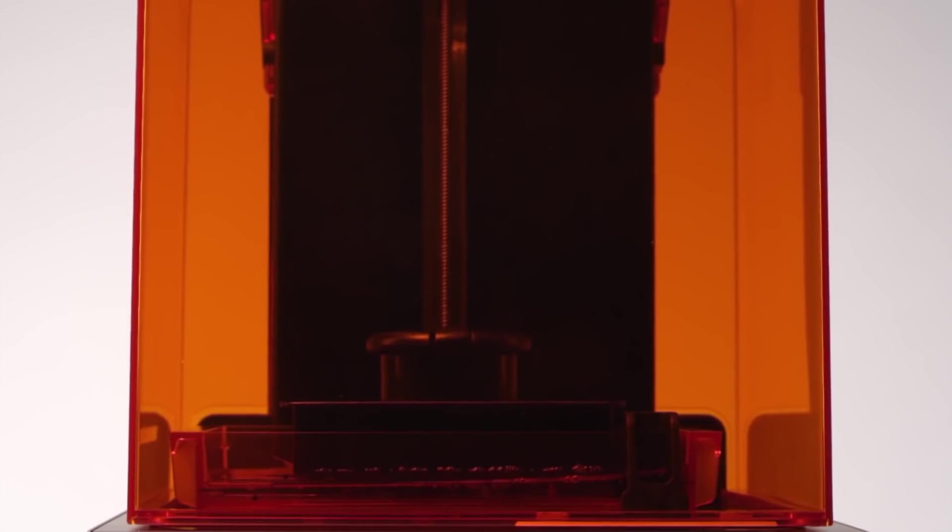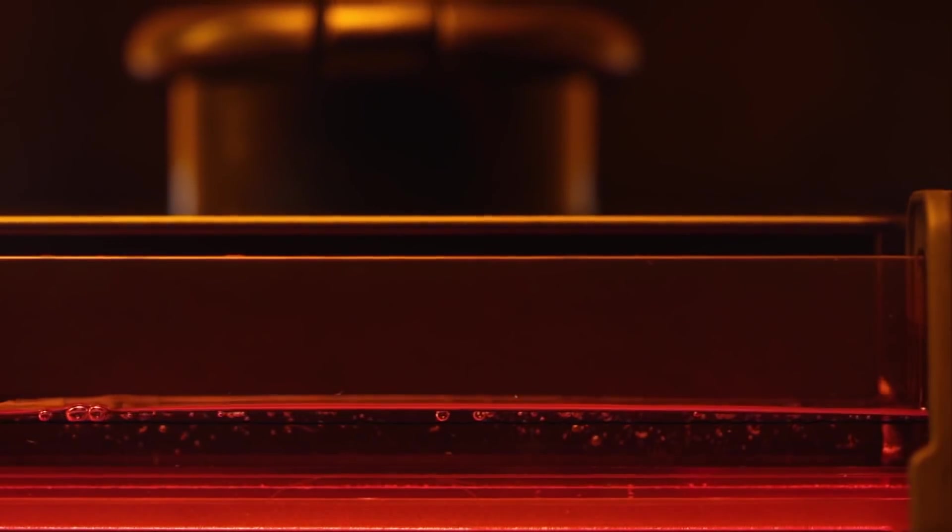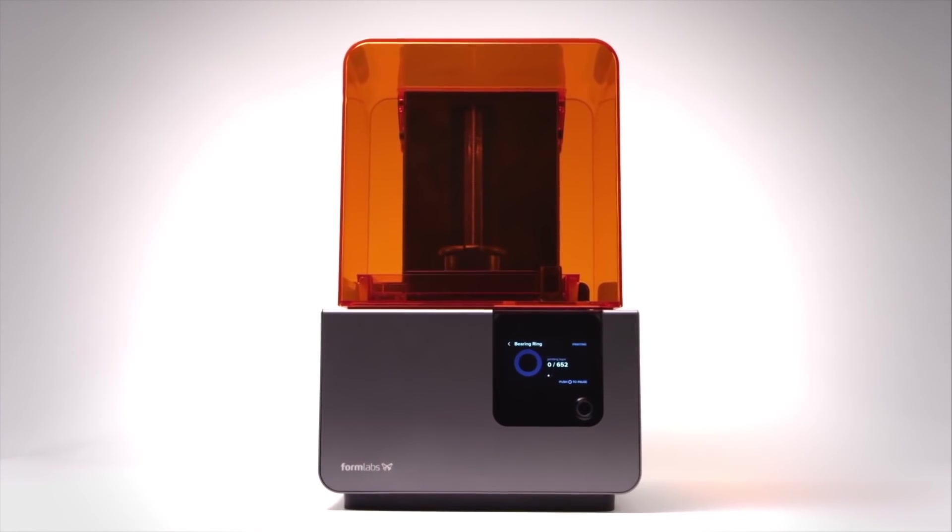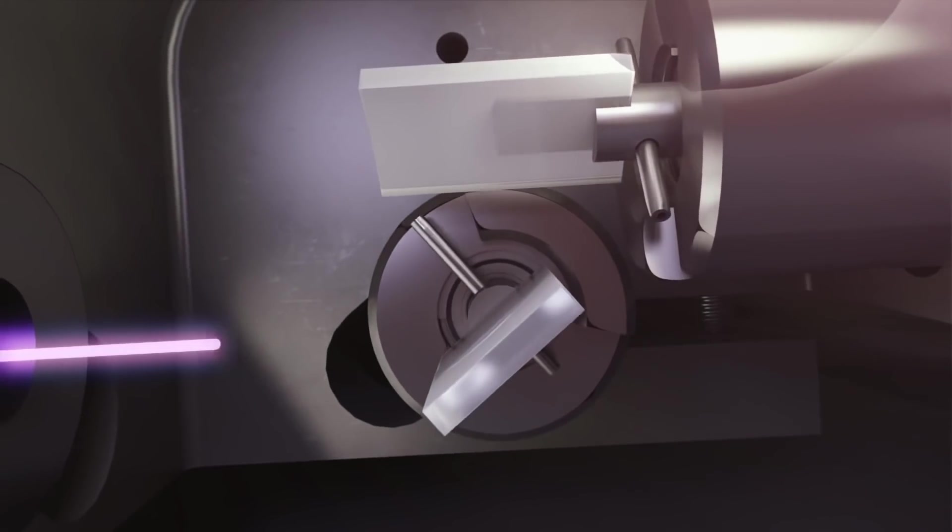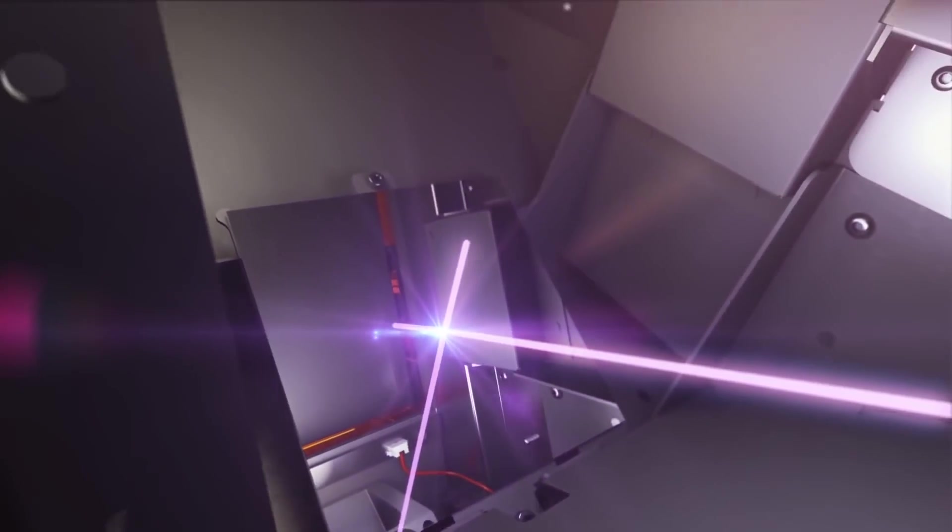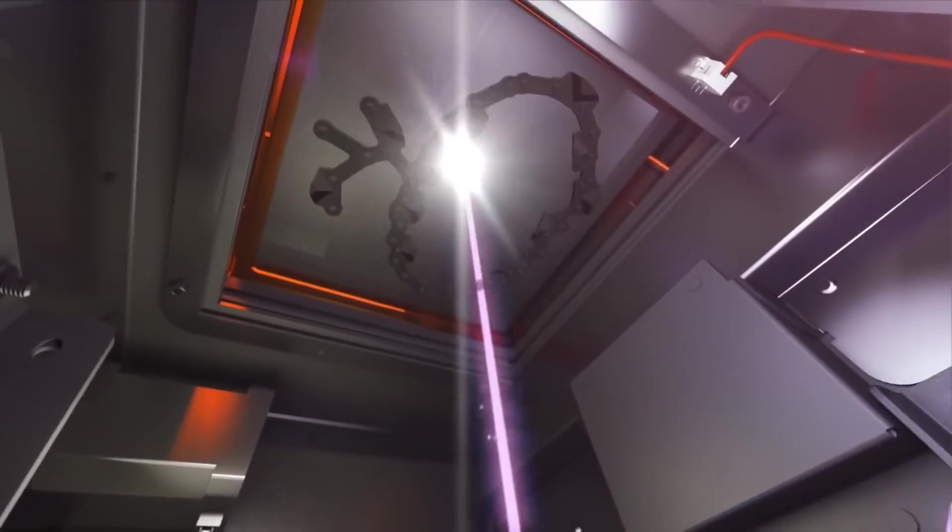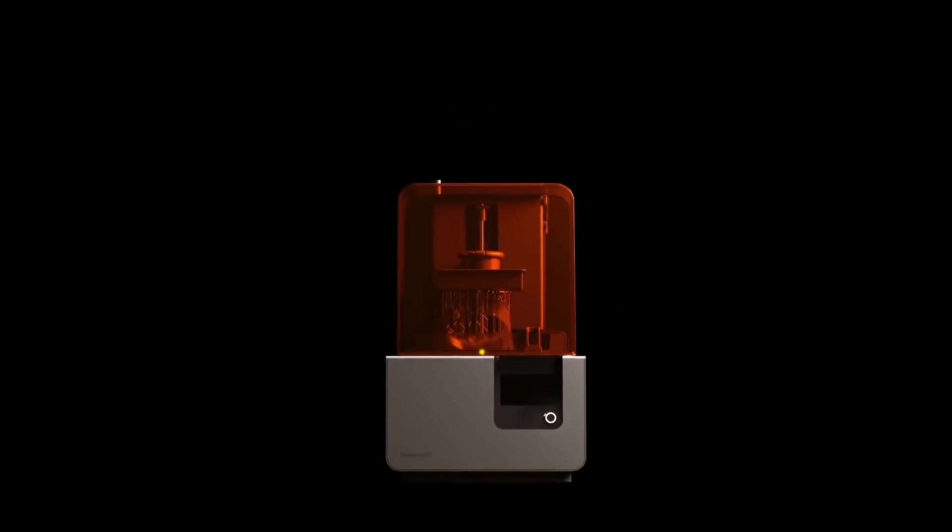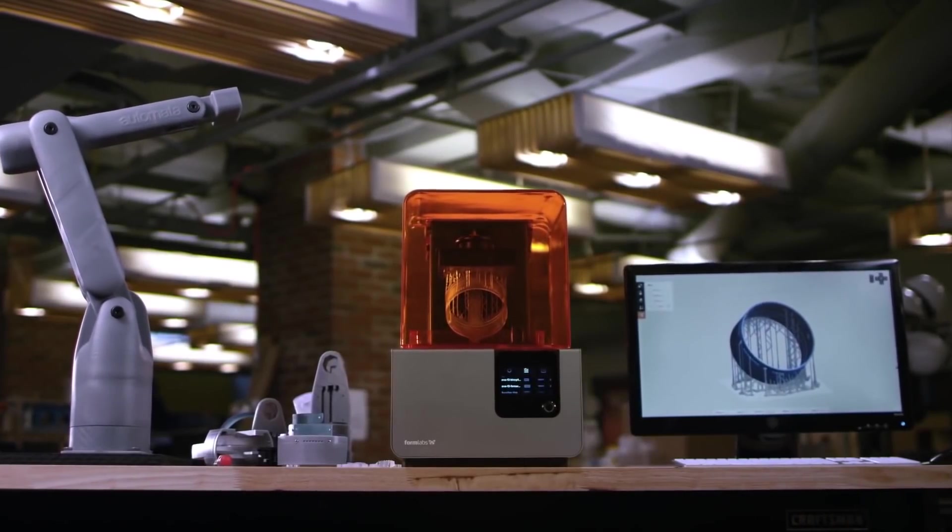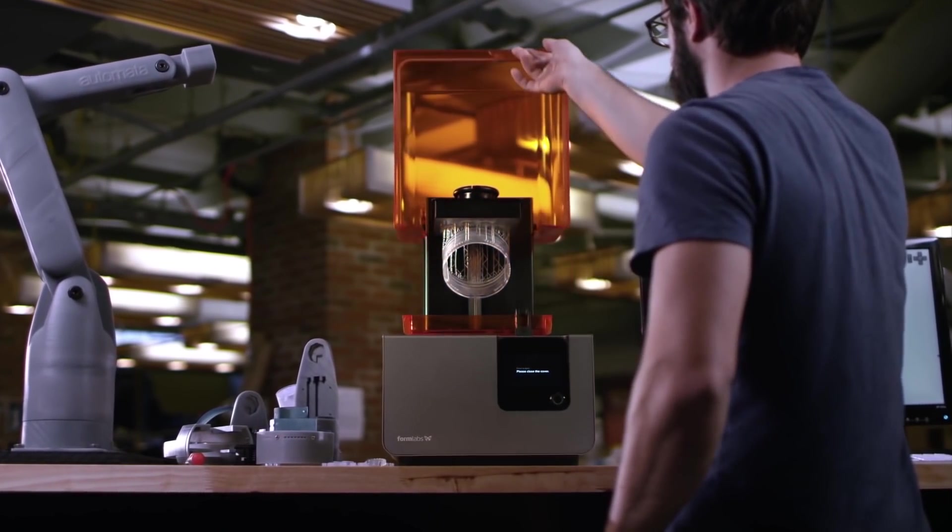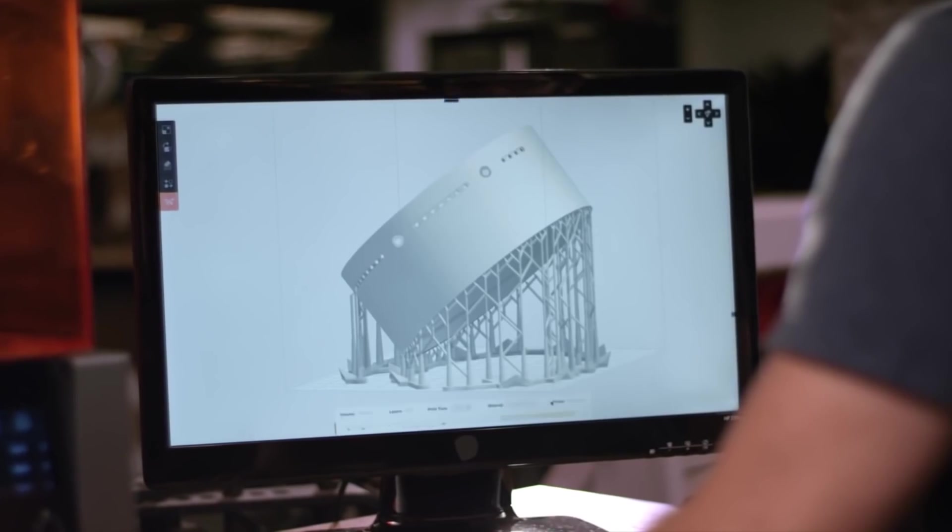We took the world's best-selling SLA 3D printer and made it even better, introducing the Form 2. Powered by a precision optical engine, the Form 2 creates laser sharp prints with beautiful detail. With a larger build volume and smarter technology, the Form 2 is designed for performance. Now you can create perfect prototypes right on your desktop.